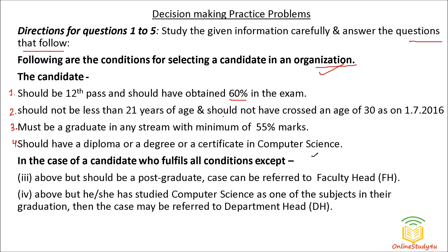So these are what is called decision making. If you want to select a candidate, he should be 12th pass and have obtained 60 percent — that is condition one. Second condition: age should not be less than 21 years and should not have crossed 30 as on 1st July 2016. Third condition: must be a graduate in any stream with minimum 55 percent marks. Fourth condition: should have a diploma, degree, or certificate in computer science.